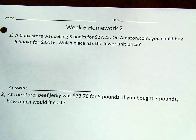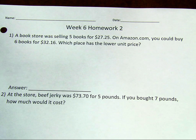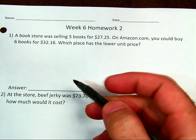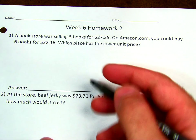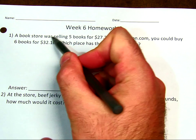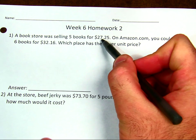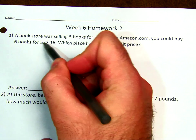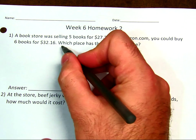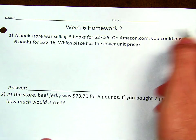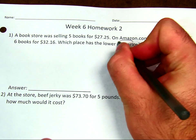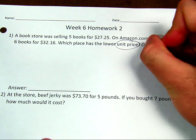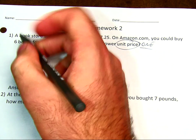Today we're going to figure out how to solve ratio word problems. I'm going to read through the problem and annotate it first — I want to circle all my important information and underline my main question. A bookstore was selling five books for $27.25. On Amazon.com you could buy six books for $32.16. Which place has the lower unit price? The key vocabulary word here is 'unit price,' which means the price for one of something.